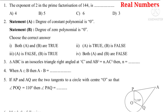Question 2: Statement A — Degree of constant polynomial is 0. Statement B — Degree of zero polynomial is 0. Choose the correct answer from options 1, 2, 3, 4. This is a question from the chapter Polynomials.